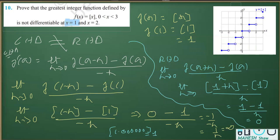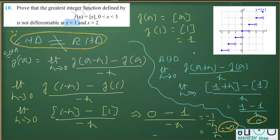We have proved that LHD ≠ RHD. Since LHD (= +∞) is not equal to RHD (= 0) at x = 1, f(x) = ⌊x⌋ is not differentiable at x = 1. Similarly we can prove it is not differentiable at x = 2, or any integer. The concluding point is that the greatest integer function is neither continuous nor differentiable at integral points; otherwise it is continuous and differentiable.